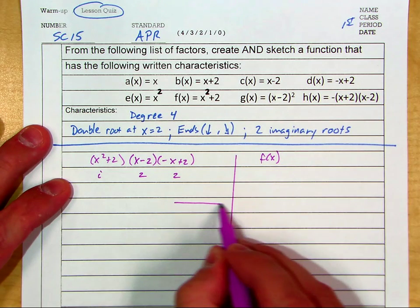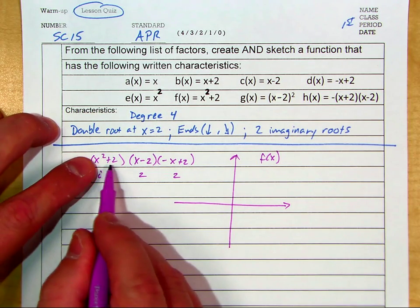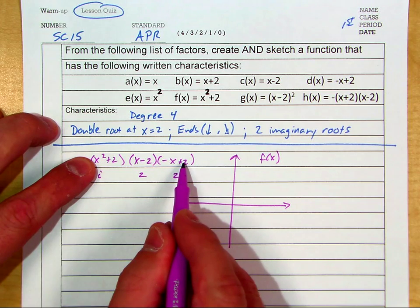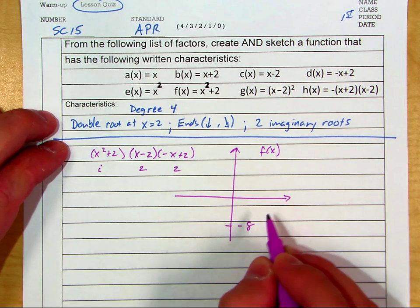So your sketch could be something like this. Where's the y-intercept going to be, by the way? 2 times negative 2 times 2. Isn't that y-intercept going to be at negative 8? So negative 8.